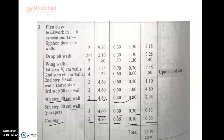Then we get the total values: step 2 value is 2.45, second step value is 1.80, 50 cm wall above the clock is 1.10, third step value is 4.60, fourth step value is 2.94, fifth step value is 0.83, and coping value is 0.33. The total value is 25.91 m³. This is the value of the superstructure.